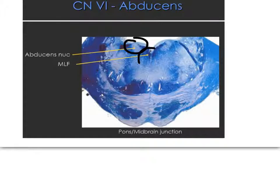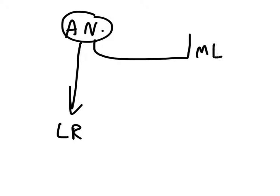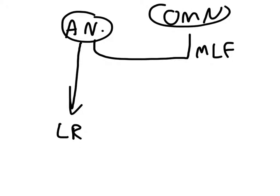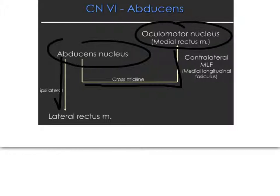The abducens nucleus uses the medial longitudinal fasciculus (MLF) to cross the midline. It goes ipsilaterally down to innervate the lateral rectus, but it also crosses the midline along the MLF to go to the oculomotor nucleus, because it wants to also innervate the medial rectus of the other eye — so that both eyes can look in the same direction.